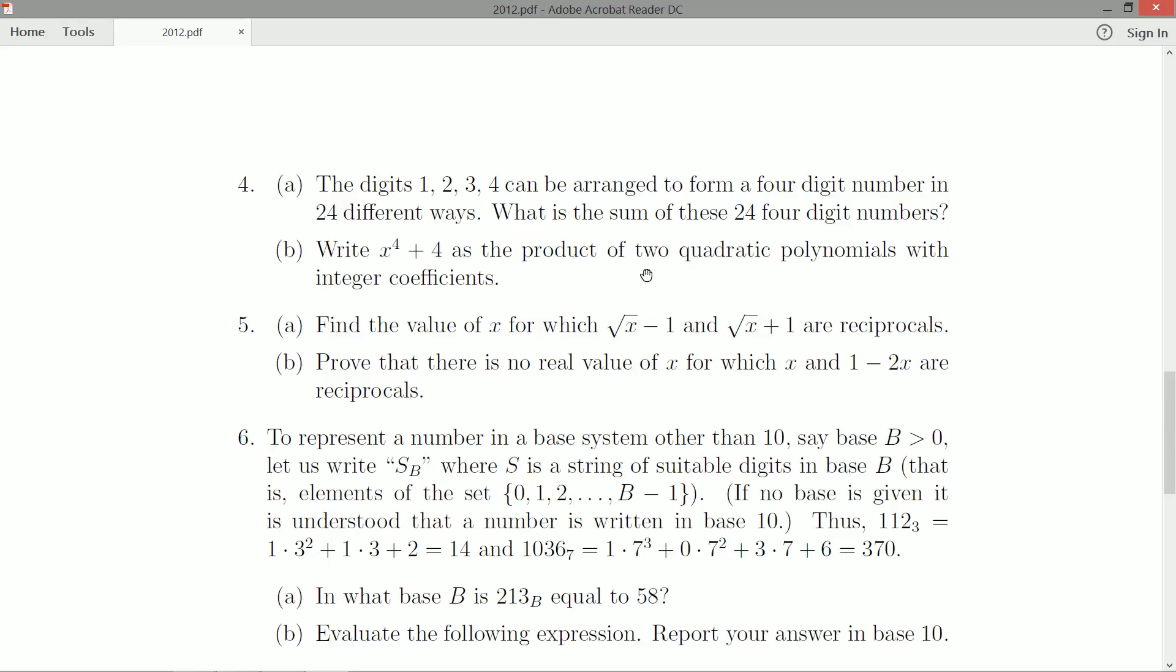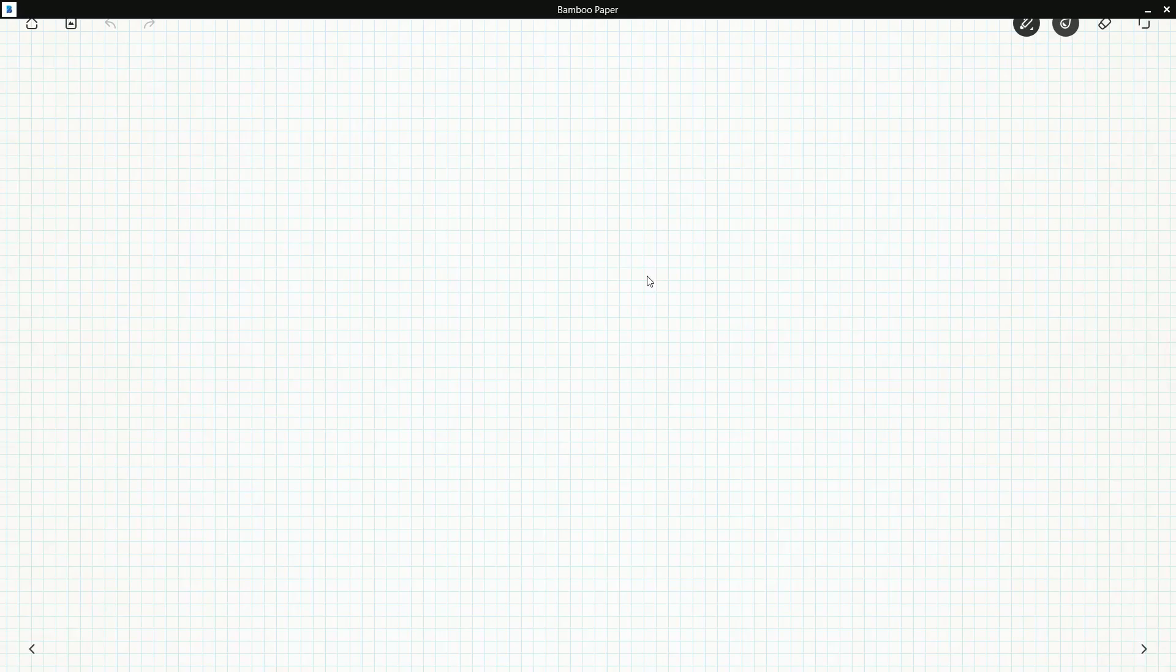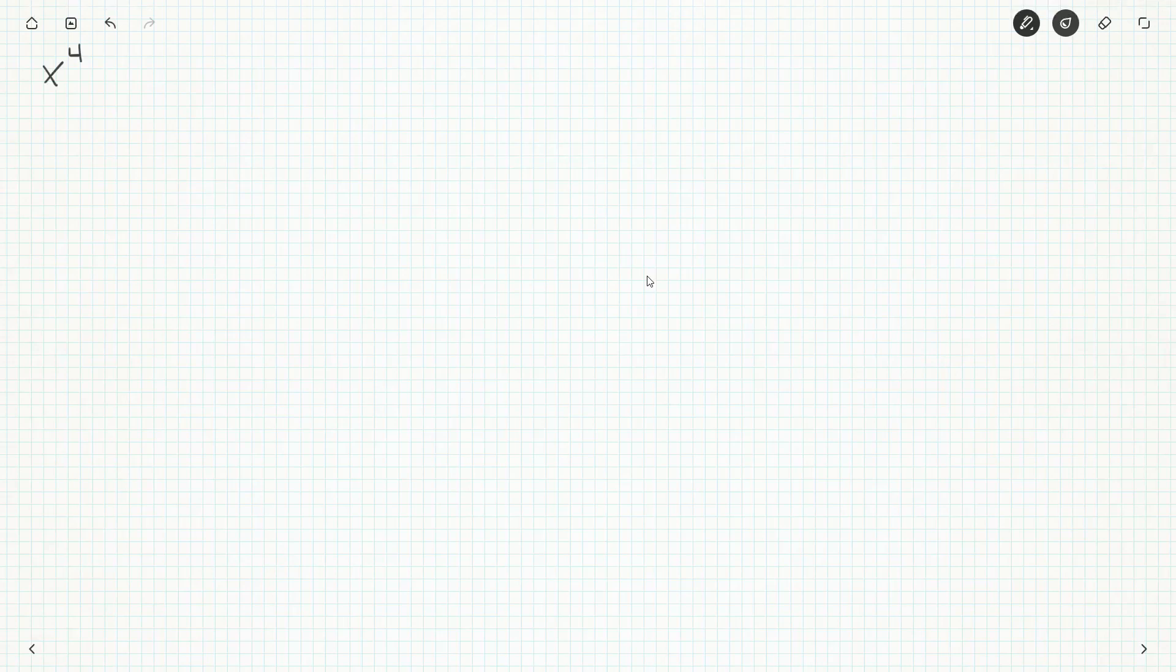What have we got here? Write x to the four plus x as the product of two quadratic polynomials with integer coefficients. Integer coefficients. Well, if I didn't have to write everything out, I could probably jump to some pretty quick conclusions. It's going to, both the x squareds are going to have coefficient one, but we're going to have to write this out anyway.